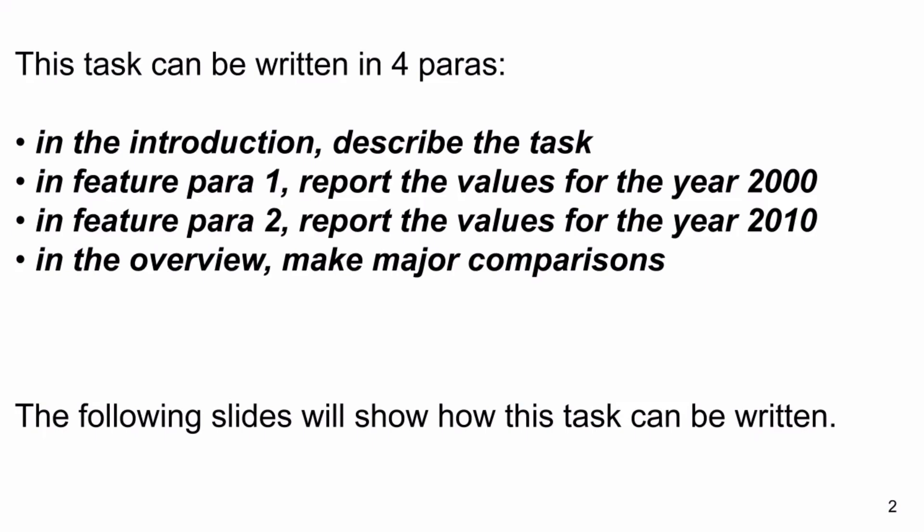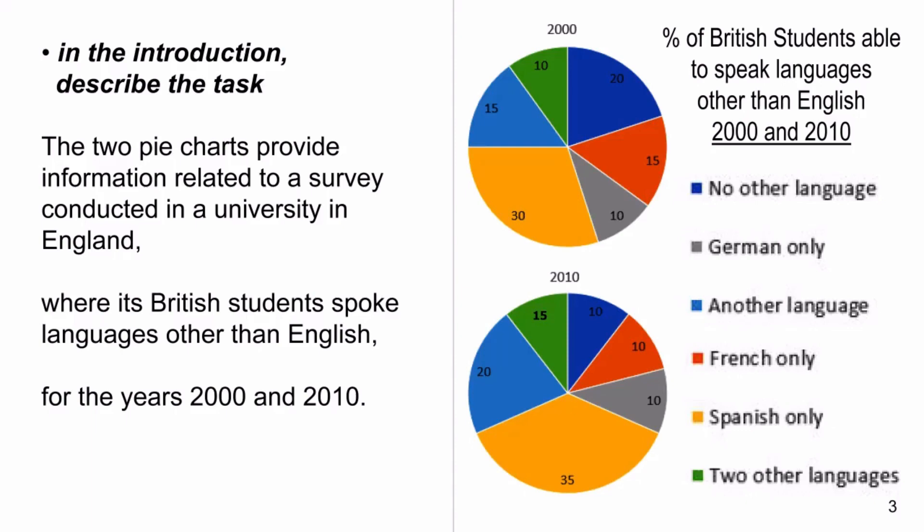In the introduction, describe the task. The two pie charts provide information related to a survey conducted at a university in England, where British students spoke languages other than English for the years 2000 and 2010.